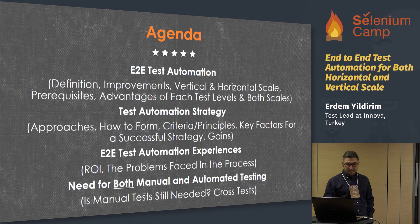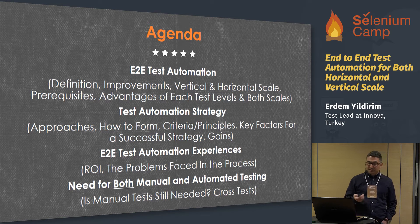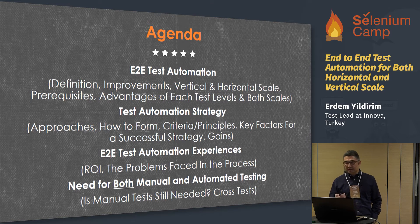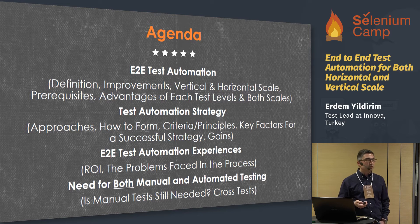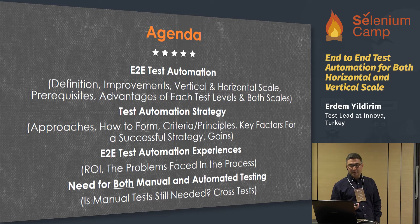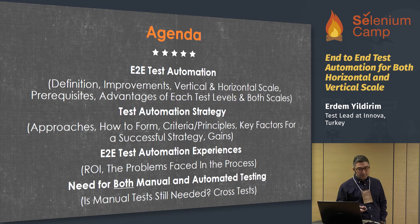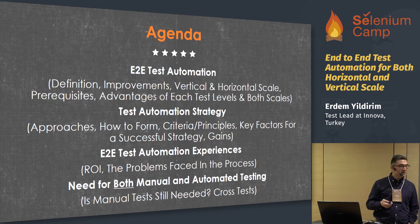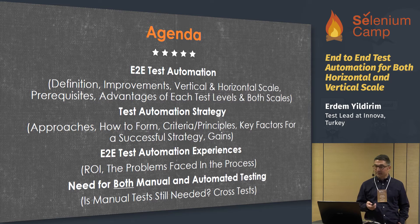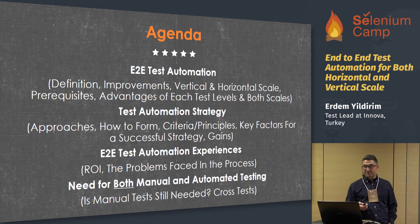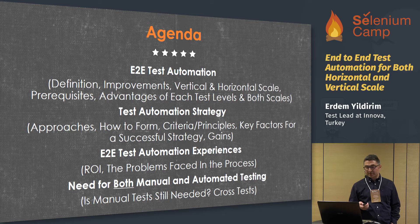Today's agenda covers end-to-end test automation with subtopics of definition, improvements, vertical and horizontal scale, prerequisites, advantages of each test level and both scales. We'll also cover test automation strategy approaches, how to form criteria, principles, key factors for a successful strategy, and gains. Then we'll look at ETU test automation experiences, return on investment, problems faced in the process, and the need for both manual and automated testing.